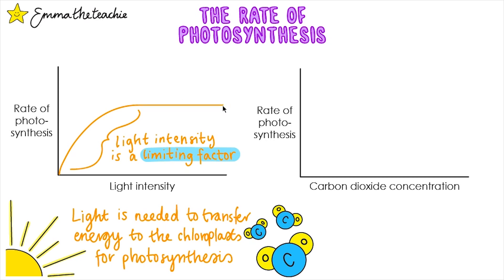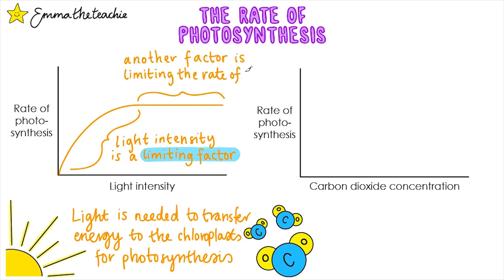At a certain point the rate of photosynthesis plateaus, which means it stops increasing. No matter how much brighter it becomes, the rate doesn't increase because light intensity isn't limiting it anymore — another limiting factor has been reached. This means that something else is preventing the rate of photosynthesis from increasing. This could be any one of the three remaining factors that we're going to look at.